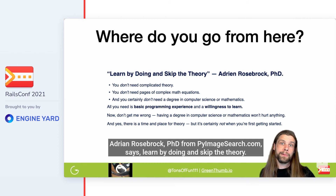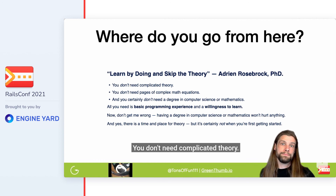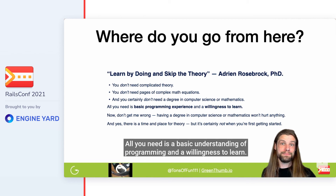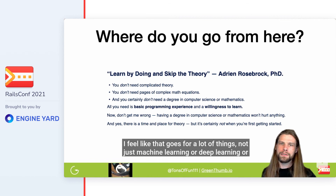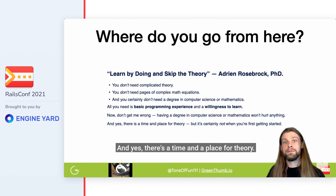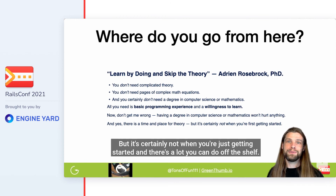Adrian Rosebrock, PhD from PyImageSearch.com, says: learn by doing and skip the theory. You don't need complicated theory, pages of complex math equations, or a degree in computer science or mathematics. I personally don't have a degree, so I appreciate him saying that. All you need is a basic understanding of programming and a willingness to learn. That goes for a lot of things — not just machine learning, deep learning, or computer vision, but programming in general. Having a degree won't hurt, and yes there's a time and place for theory, but it's certainly not when you're just getting started.